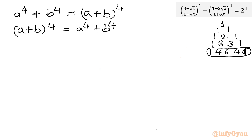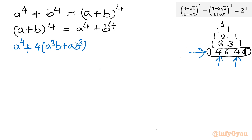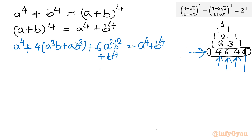Now I will use the expansion. The coefficients are 1 4 6 4 1. So expanding (a plus b)^4: I write a^4, then taking 4 common I write 4(a³b + ab³), and the middle term with coefficient 6 is 6a²b², and then b^4. The right hand side is a^4 plus b^4. So I can cancel a^4 and b^4 from both sides.